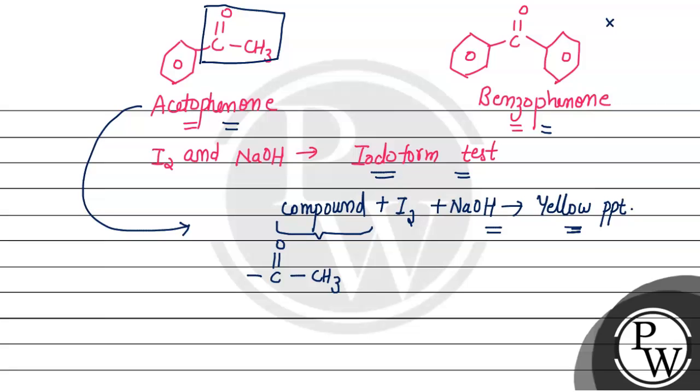Then we have acetophenone and benzophenone easily distinguished. If we have yellow precipitates, our compound is acetophenone. If there is no precipitate, it's benzophenone.